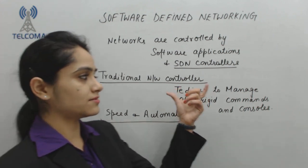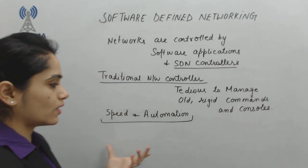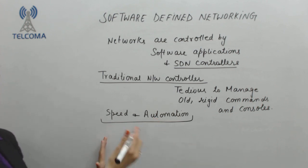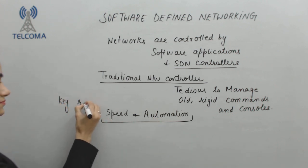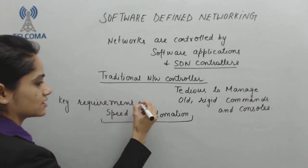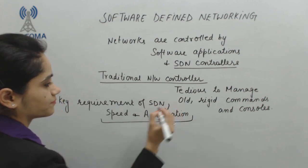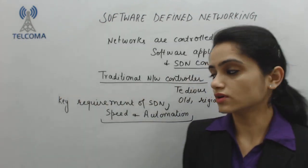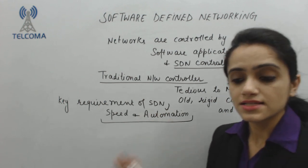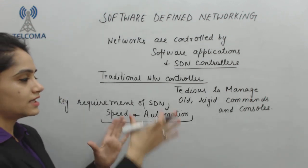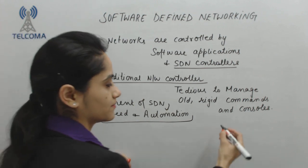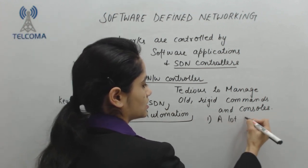The key requirement of our system is speed and automation, which could not be possible in a traditional network control system. Speed and automation is the key requirement of SDN — SDN networks should have speed and provide automation in our networks.